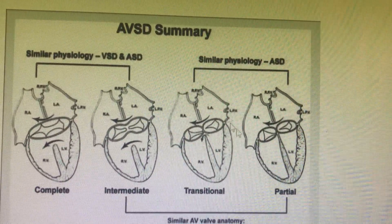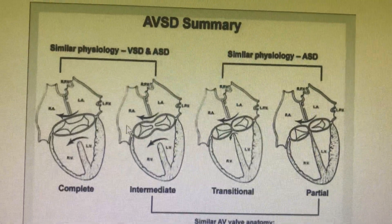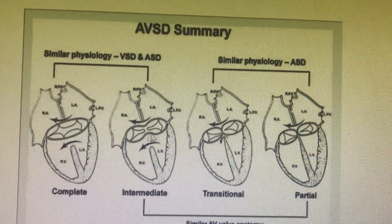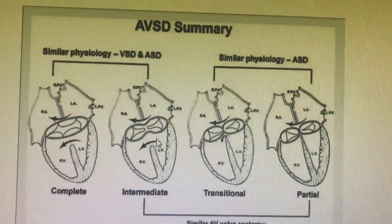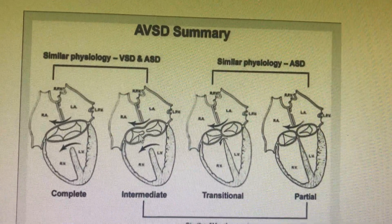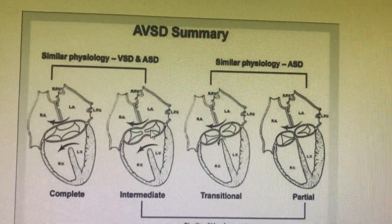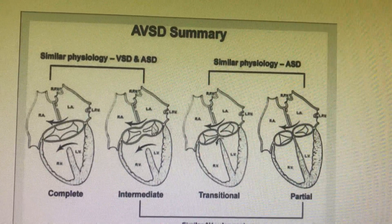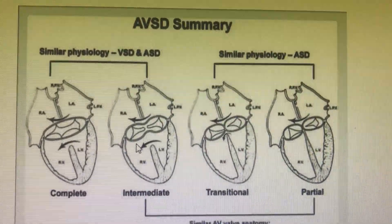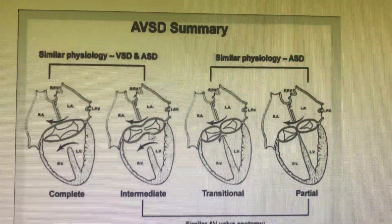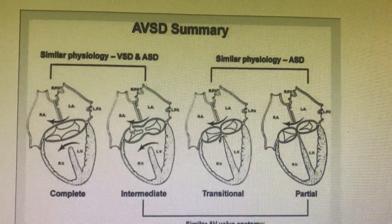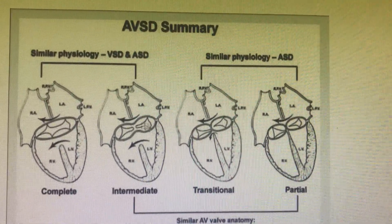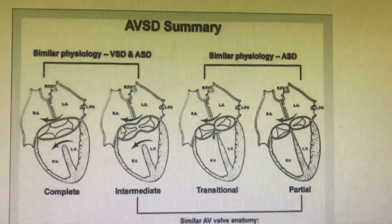Both have a physiology similar to ASD. In the intermediate kind of AVSD, there is a large inlet VSD, a large septum primum ASD, and partial fusion of the atrioventricular leaflets — that is, the mitral and tricuspid leaflets are fused partially. These are called the anterior bridging leaflet and posterior bridging leaflet, along with lateral mural leaflets. If the anterior bridging leaflet is partially divided, as in this situation, then it is the intermediate variety of AV canal septal defect.